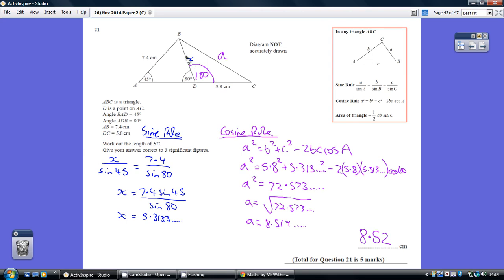Because we're trying to work out a side, let's have the sides on top. So X over sine 45 equals 7.4 over sine 80, straight from the tables at the front of the paper, the sine rule.